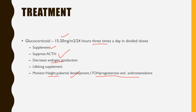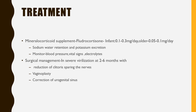For mineralocorticoid supplementation, since aldosterone is deficient, give fludrocortisone. Younger infants require higher dosage compared to older children. It helps with sodium and water retention and potassium excretion. When giving fludrocortisone, monitor vital signs — heart rate should be normal with no tachycardia, blood pressure maintained without hypotension or hypertension, and electrolytes — sodium and potassium should be within normal limits.